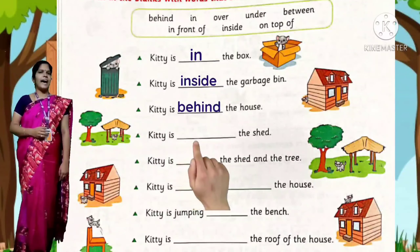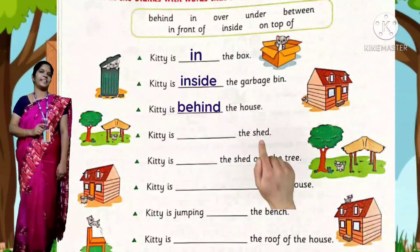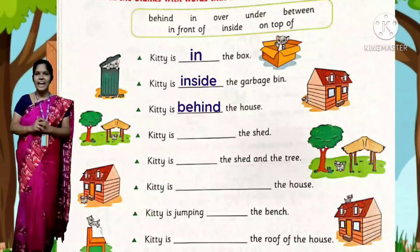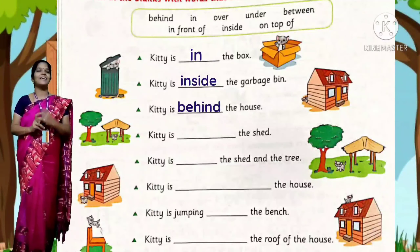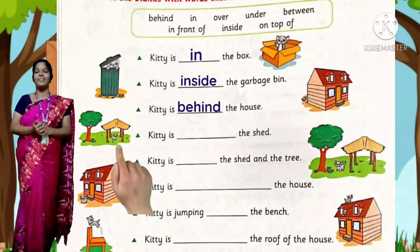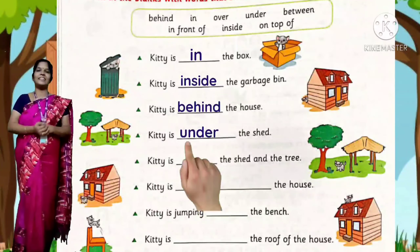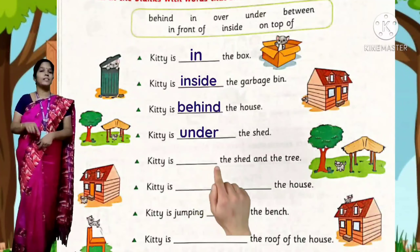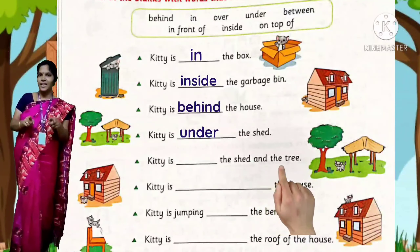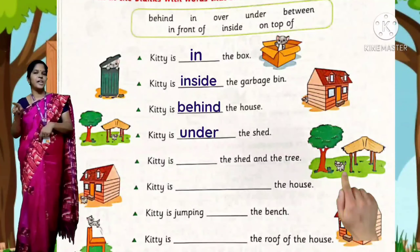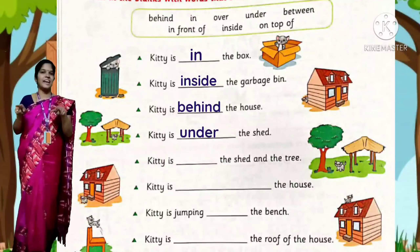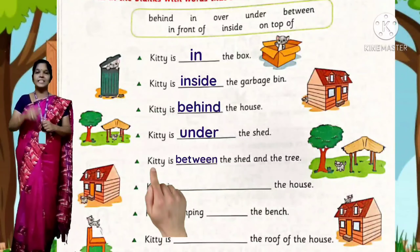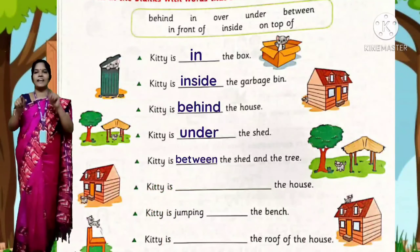Kitty is ___ the shed. Kitty is under the shed. And the next question: Kitty is ___ the shed and the tree. Kitty is between the shed and the tree.